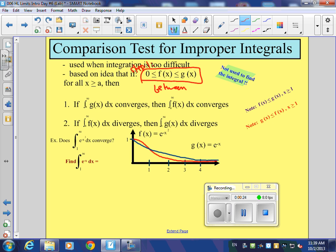You need to show that your function is between zero and another function, or a known function is less than your function. But you need to show some kind of betweenness for x greater than or equal to a. Usually x is greater than one, but not always.